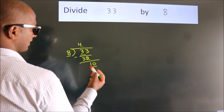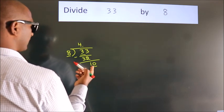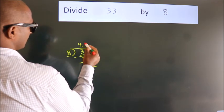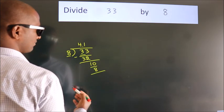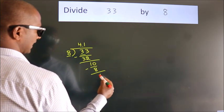So, 10. A number close to 10 in the 8 table is 8 ones 8. Now, we subtract. We get 2.